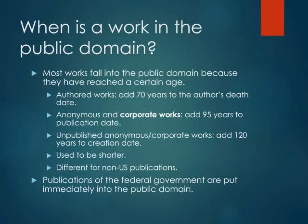Later than that, there's no quick way to know how long any particular work will stay in copyright, because the law has kept changing, and different countries have different copyright term limits. For works published since 1976 in the United States, if the work has one or more named authors, you take the date that the last author dies, go to December 31st of that year, and add 70 years — called life plus 70. For published anonymous or corporate works, you take the date of publication and add 95 years. For unpublished anonymous or corporate works, you take the creation date and add 120 years.